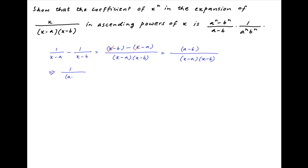Therefore, 1 upon (a minus b) times the quantity [1 upon (x minus a) minus 1 upon (x minus b)] is equal to 1 upon (x minus a)(x minus b).